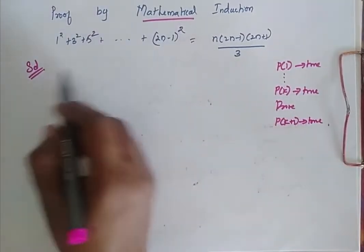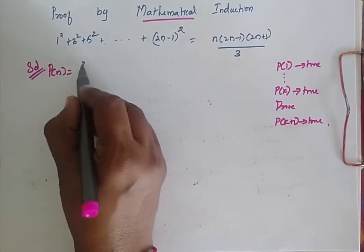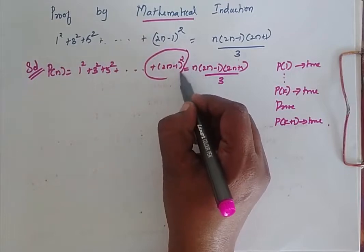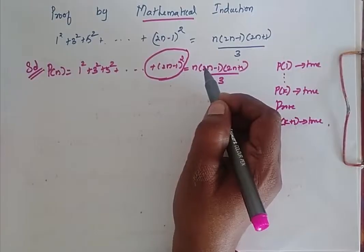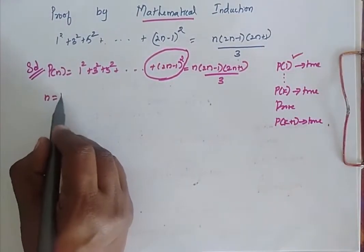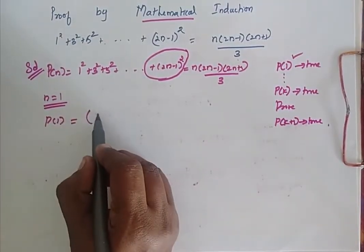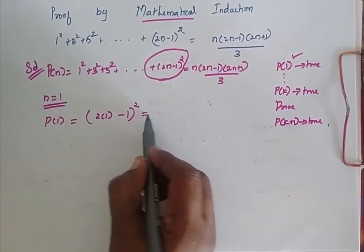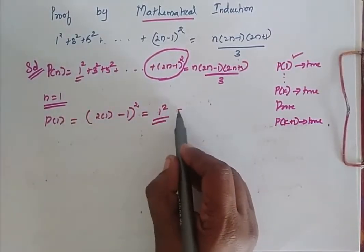So now when I come for the solution, I consider my P of N as this. This is the general term which we use to find the last term of this series based on the value of N. Now I am going to find my P of 1, so my N is equal to 1. So P of 1 is equal to wherever I have N, I am going to substitute 1. So 2 into 1 minus 1, the whole square, which is equal to 2 minus 1, that is 1 squared, which is equal to 1.